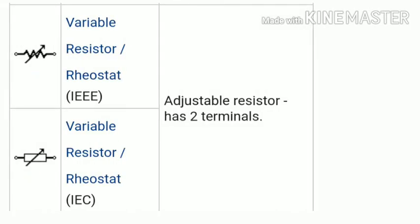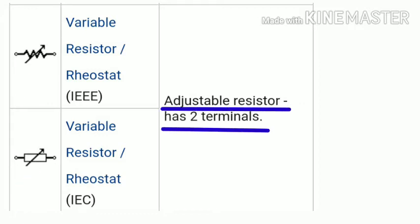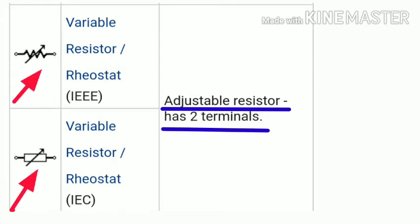The next symbol is the variable resistor, also known as a rheostat. According to IEEE, the variable resistor symbol is a two-terminal resistor. We use the variable resistor in circuits or electrical machines when we need variable resistance or variable current.